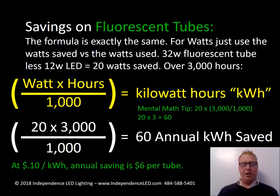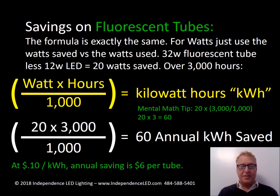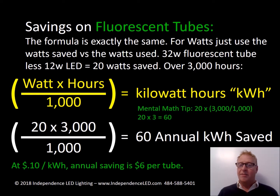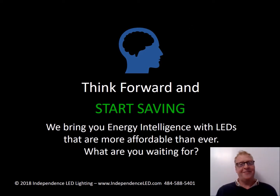Savings on fluorescent tubes: going from 32 watts down to a 12 watt LED saves 20 watts over the same 3,000 hours. With the mental math, 20 times 3 is 60 — that's 60 annual kilowatt hours saved. At 10 cents, that's $6 per tube every year for probably well over a decade. Think forward and start saving. We bring you energy intelligence with LEDs that are now more cost effective than ever — what are you waiting for?